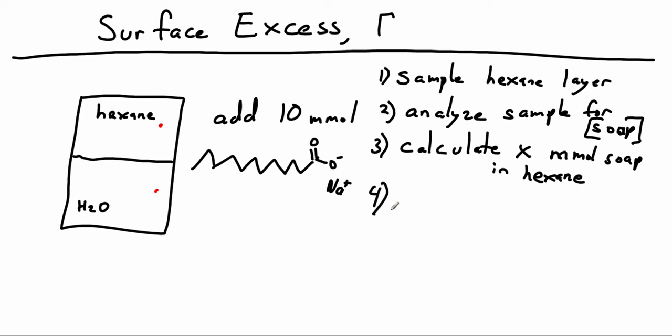We then repeat the experiment in the water. So we sample some of the water. We see what the concentration of soap in the water is. And we multiply by the volume of water to see how many millimoles of soap are in the water. And we find that there are y millimoles. So y is just some number, x is some number.